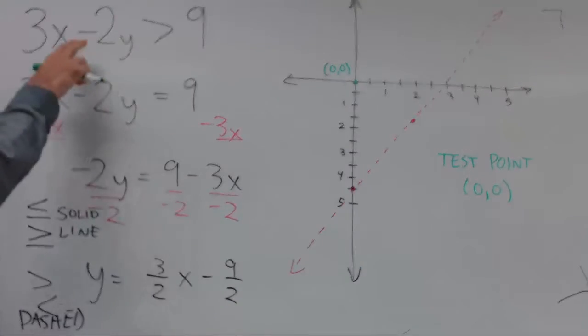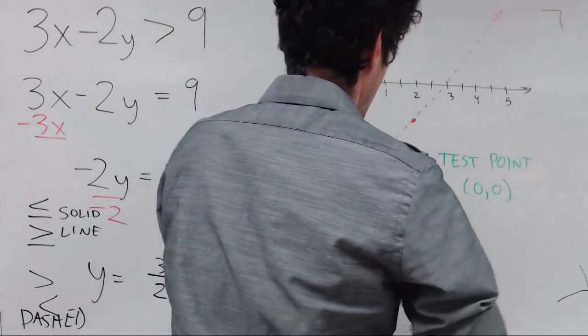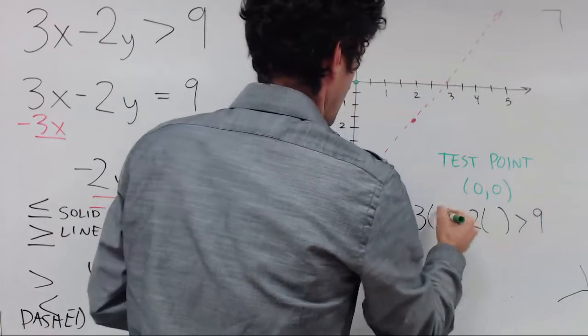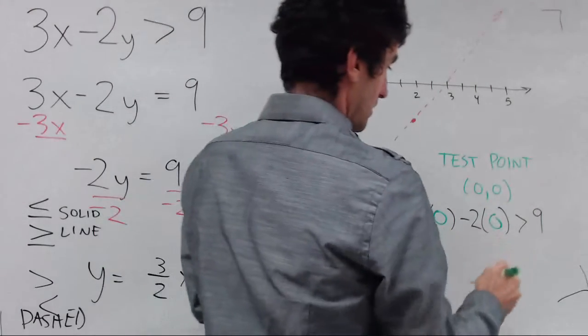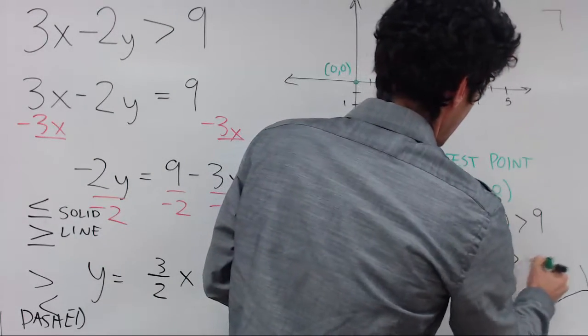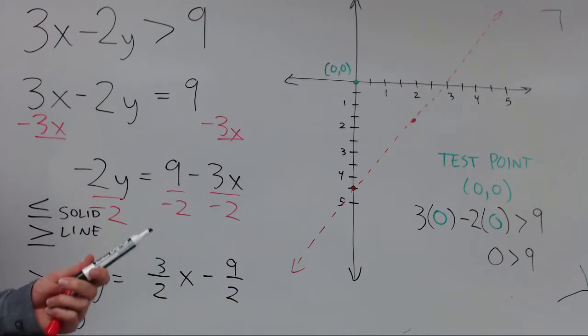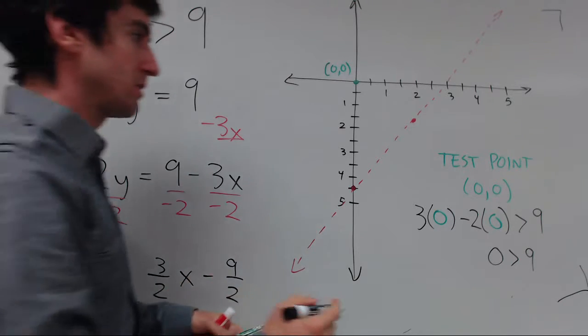We're going to substitute that into the original inequality. And the zeros make the arithmetic easy because we just have zero on the left. Zero minus zero is zero. So if the test point results in a true statement, then you picked the right side and you would shade that side. If it results in a false statement, you picked the wrong side, you would shade the other side. So we have zero is greater than nine, that is false.